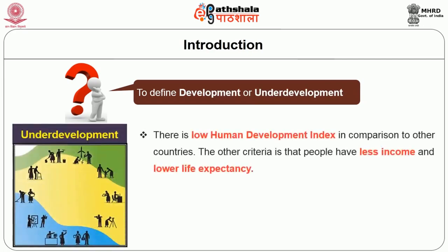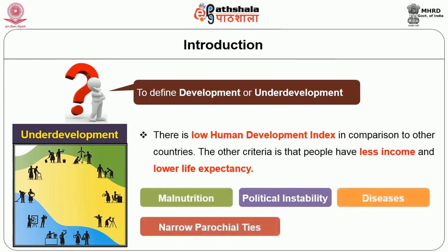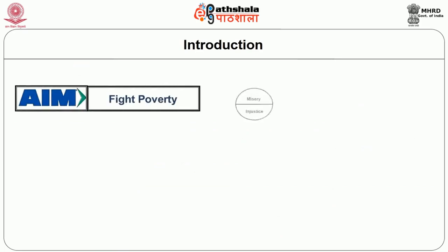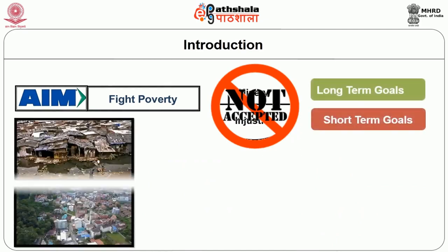Though there is no universal criteria to define development or underdevelopment, some consensus exists. Underdevelopment means a low human development index in comparison to other countries; people have less income and low life expectancy. Factors that hinder growth include malnutrition, political instability, diseases, narrow parochial ties and traditional social structures. The aim of development is to fight poverty and not to accept misery and injustice, and it means having both long-term and short-term goals.